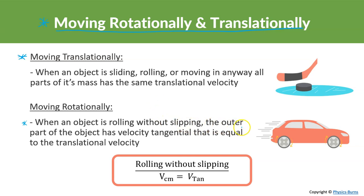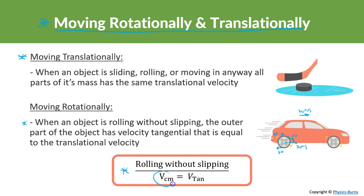So what does that mean? Let's say this car is going 30 meters per second. The center of the wheel is going 30 meters per second translationally, but also the outer part of the wheel is going 30 meters per second tangentially. Rolling without slipping means whatever the center of mass is moving — in this case 30 meters per second — the tangential velocity on the outside is going to be the same as that translational velocity.